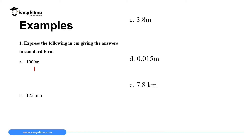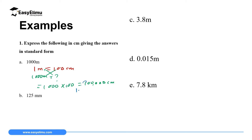Question A: 1000 meters. We first change to centimeters. Since 1 meter equals 100 centimeters, 1000 meters equals 1000 times 100, which is 100,000 centimeters. To write it in standard form, one integer must be in front of the decimal point, so it is 1.0. We moved backward 1, 2, 3, 4, 5 places to the left, so the answer is 1.0 times 10 raised to power 5 centimeters.